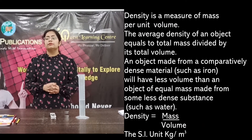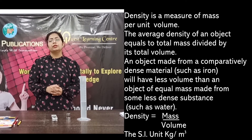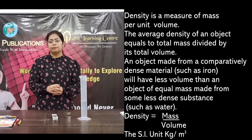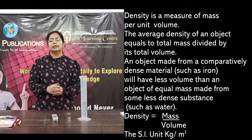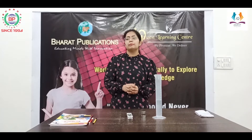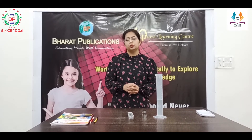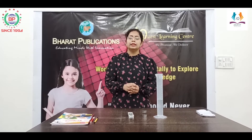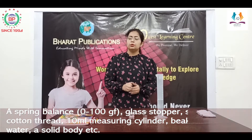Here we will talk about density. Density is the mass per unit volume, having the formula: density is equal to mass divided by volume. The SI unit of mass is kilogram, the SI unit of volume is meter cube, so the SI unit of density is kilogram per meter cube.